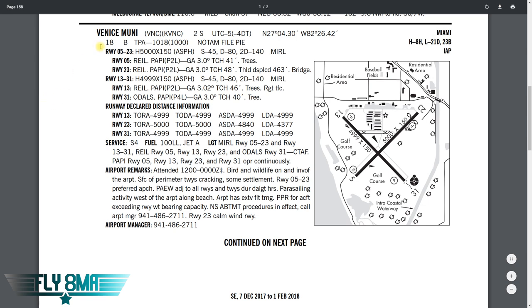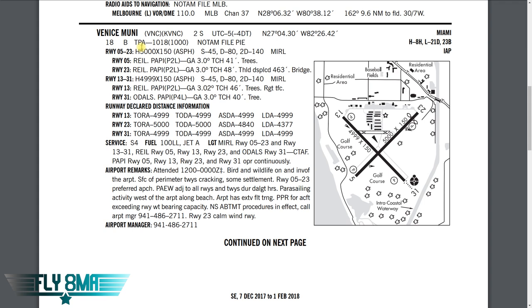Next, 18 feet above sea level — that's the airport elevation. B means there's a beacon, and beacons are in operation from sunset until sunrise unless otherwise noted. Traffic pattern L2, TPA is 1018 MSL, 1000 feet AGL. The NOTAM file — any NOTAMs filed are going to be with PIE flight service, St. Petersburg radio. Every public use airport has a NOTAM file, and PIE is who's going to have them for Venice.